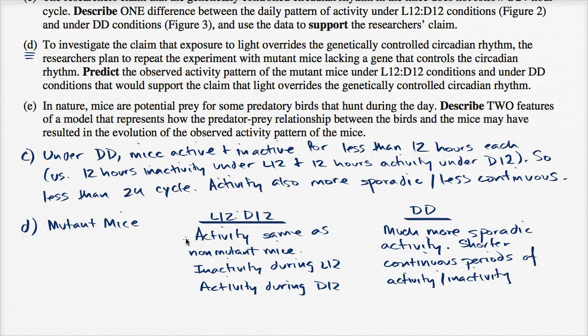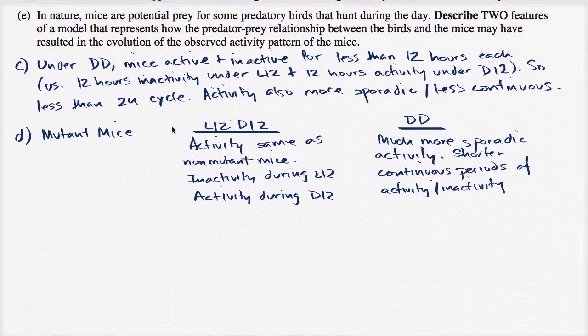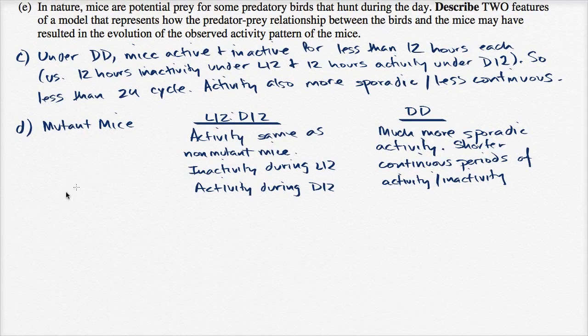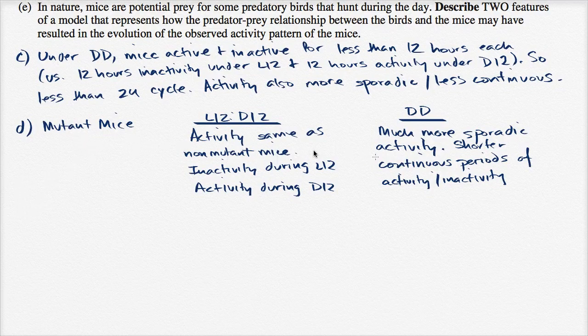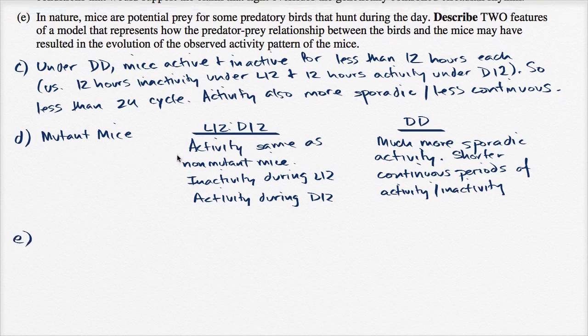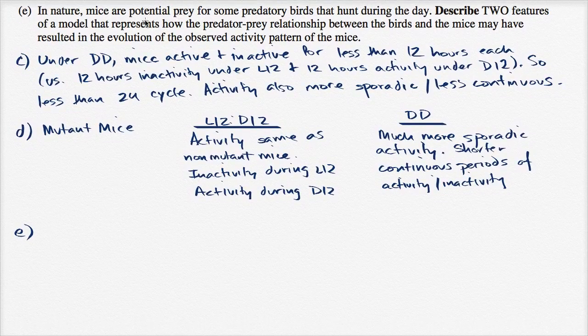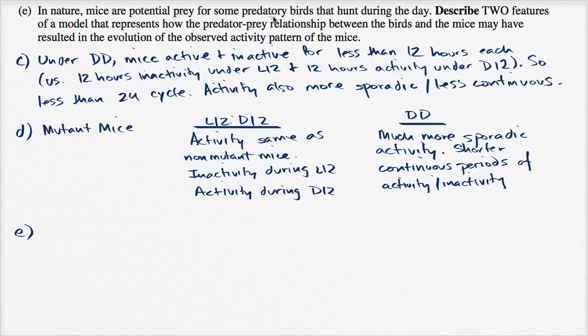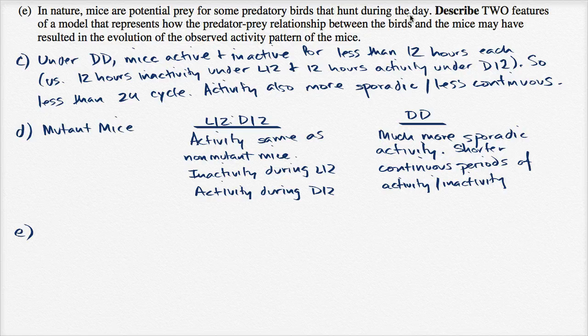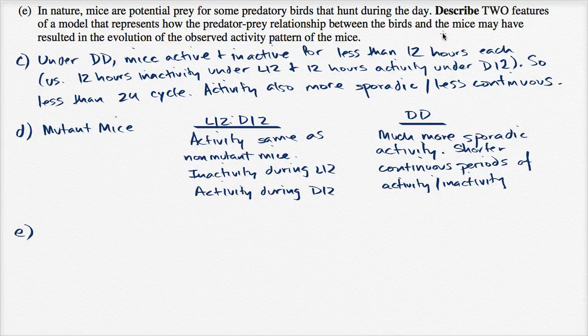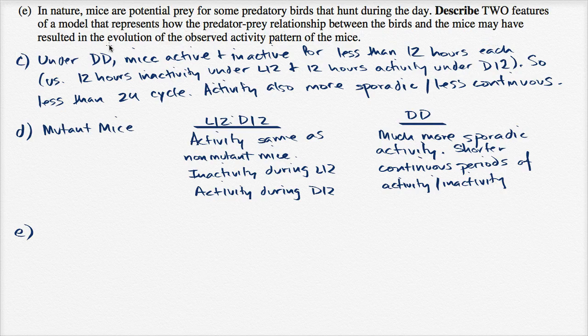Alright, now let's look at part E now. That was my predictions that I would see for mutant mice in either of these. So now let's go to part E. In nature, mice are potential prey for some predatory birds that hunt during the day. Describe two features of a model that represents how the predator-prey relationship between the birds and the mice may have resulted in the evolution of the observed activity pattern of mice.